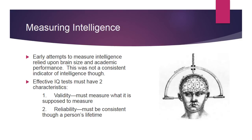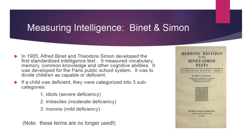The IQ test you take as a five-year-old should be fairly consistent throughout one's lifetime when you're 50, barring any brain trauma. The idea of the IQ test came from around 115 years ago — 1905 — when Alfred Binet and Theodore Simon developed the first standardized intelligence test. It measured vocabulary, memory, common knowledge, and other cognitive abilities.